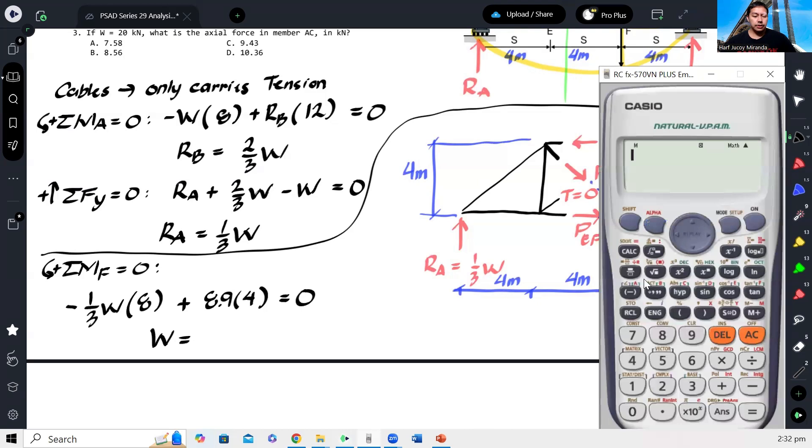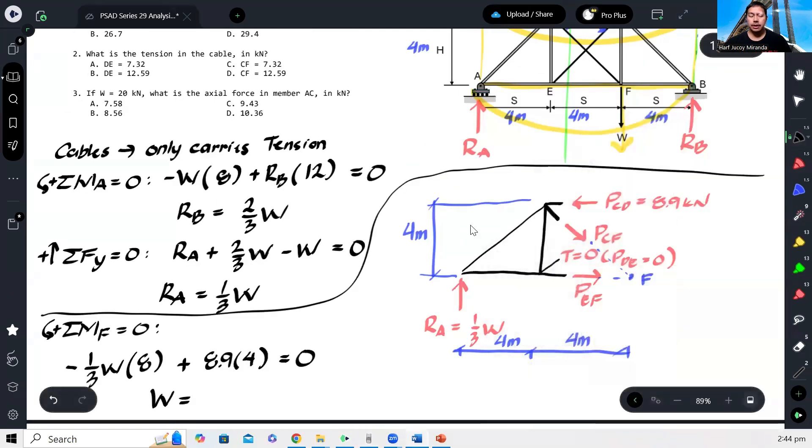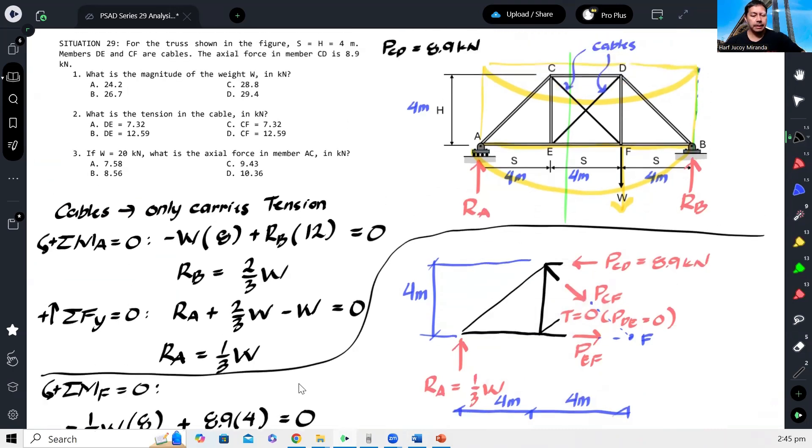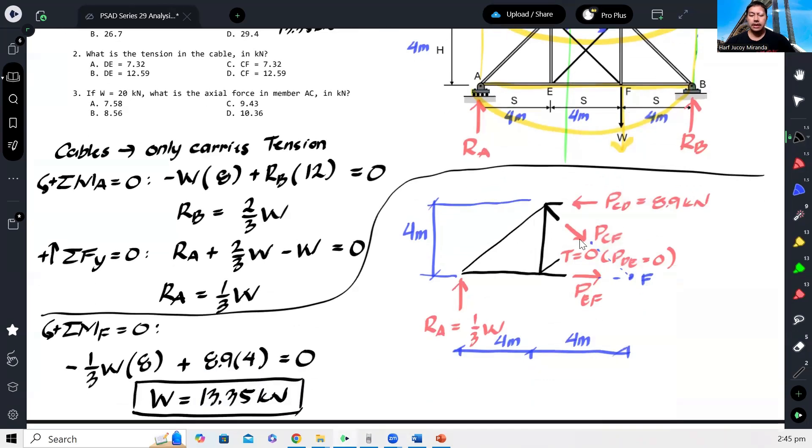This equation works out nicely. W would be negative 1/3, or transposing, 8.9 times 4, cross multiply 3, divide 8. This gives me W is 13.35 kilonewtons. That will be our answer for the first question. The correct answer should be 13.35 kilonewtons.